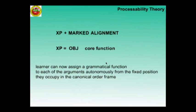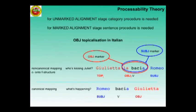At this stage, learners can put an object first instead of an adjunct, but what follows is again the canonical order and the object is not signaled as such. The listener will take it as the subject, and you have the mismatch of la birra porta il professore from the first slides. So here at the very last stage you have the fronted topical element, which is a core function, and the learner has learned to assign grammatical functions independently from position online.